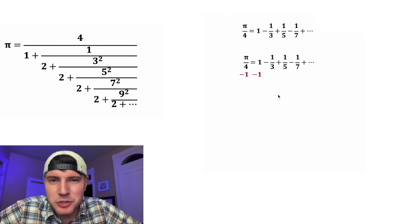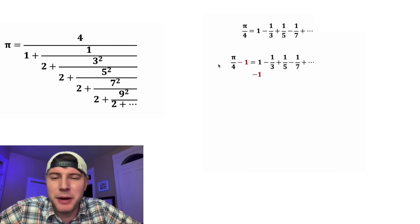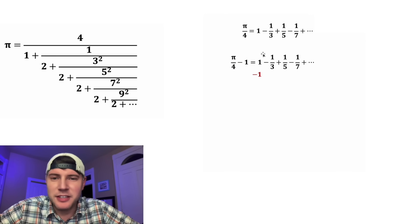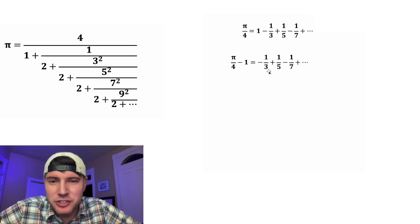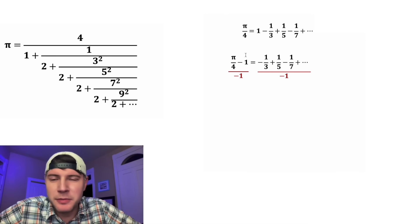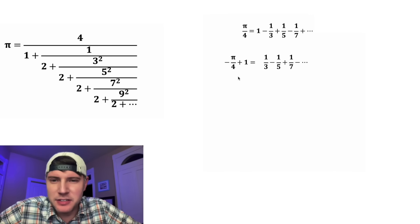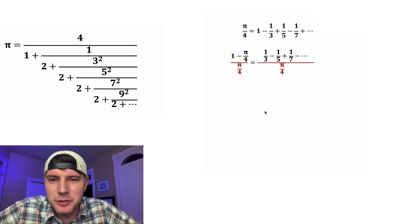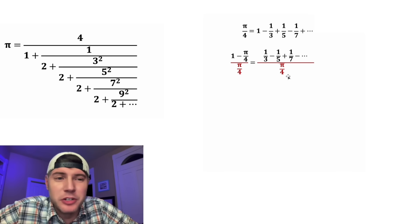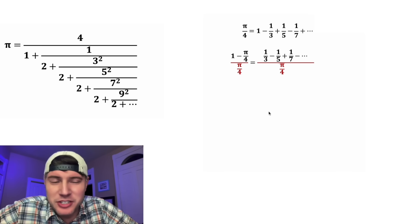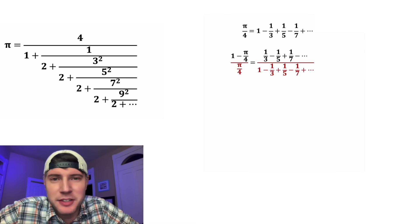Let's bring it back to here, and then let's subtract 1 from both sides. On the left-hand side we have pi over 4 minus 1, and on the right-hand side these 1s cancel each other out, so we end up with the sum starting at negative 1 third. Let's have the leading term be positive, so let's divide both sides by negative 1. On the left we switch to a negative term and a positive term, and on the right all negatives become positive and positives become negative. Then let's divide both sides by pi over 4. On the right-hand side, we substitute the original sum — 1 minus 1 third plus 1 fifth and so on — in place of pi over 4.